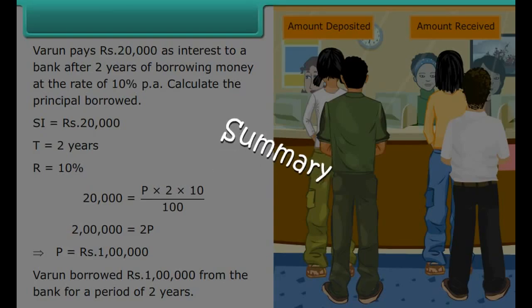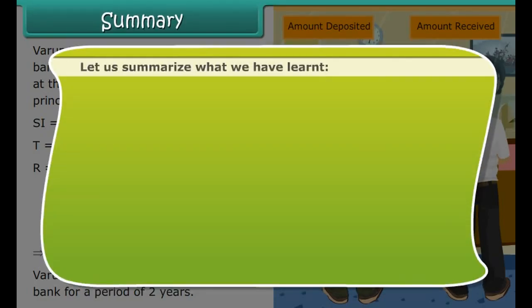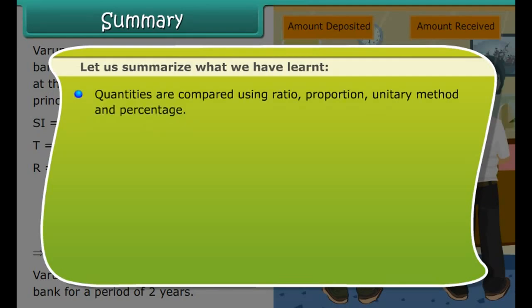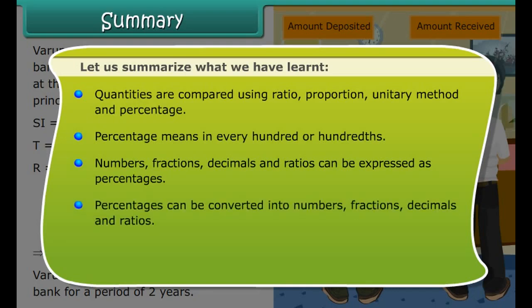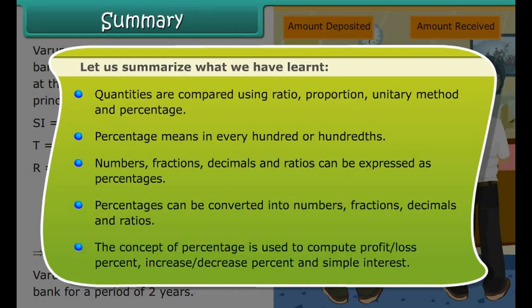Summary. Quantities are compared using ratio, proportion, unitary method and percentage. Percentage means in every hundred or hundredths. Numbers, fractions, decimals and ratios can be expressed as percentages, and percentages can be converted back into numbers, fractions, decimals and ratios. The concept of percentage is used to compute profit or loss percent, increase or decrease percent, and simple interest.